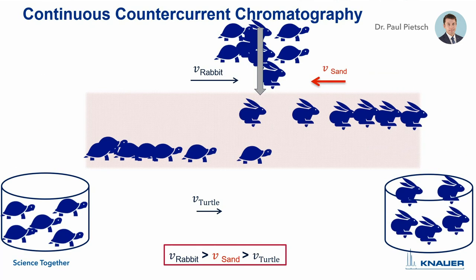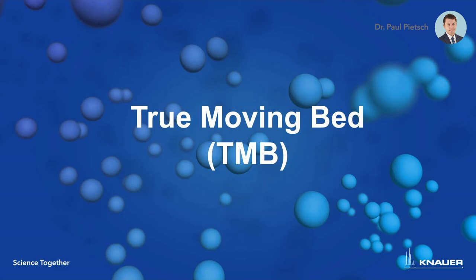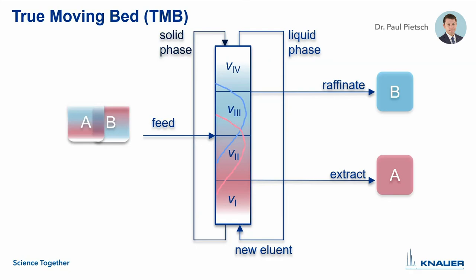Let's have a more scientific view. The simulated moving bed chromatography is explained by the theoretical concept of the true moving bed process. In contrast to classical chromatographic processes in which only the liquid phase moves, the solid phase moves in counter-current. The principle of TMB is illustrated in this figure. You see a standing column where the solid and liquid phases move in counter-current direction. The process is divided by the two inlet streams — feed and eluent — and the two outlets — extract and raffinate — into four zones.